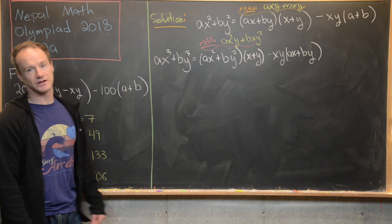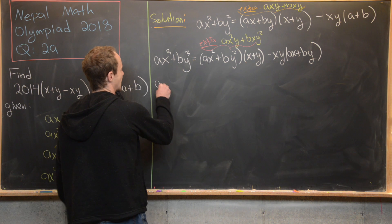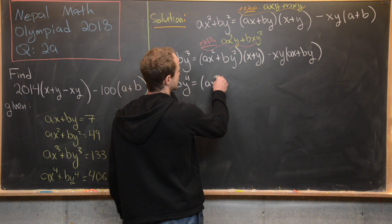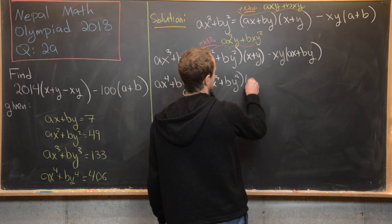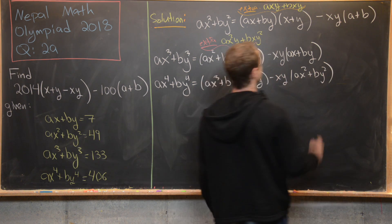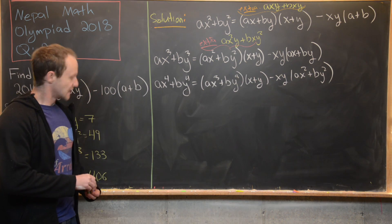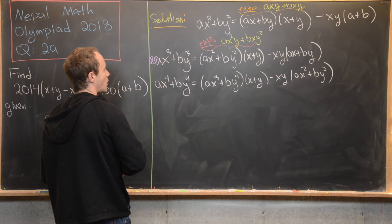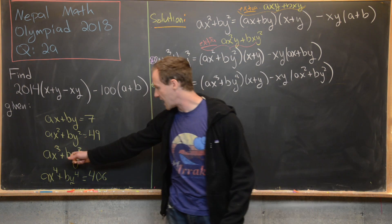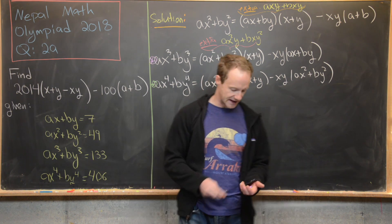Now let's make the analogous equation involving the fourth, third, and second equations. We have ax⁴ + by⁴ = (ax³ + by³)(x + y) - xy·(ax² + by²). Now we substitute in our known values: ax³ + by³ = 133, ax⁴ + by⁴ = 406, ax² + by² = 49, and ax + by = 7.